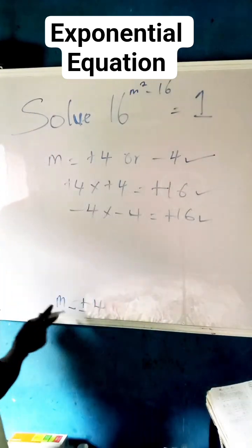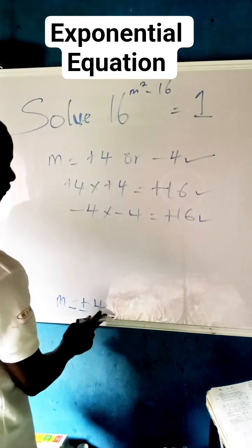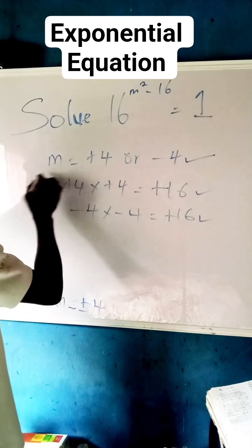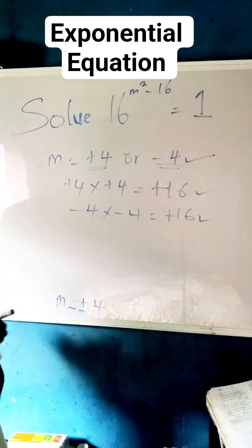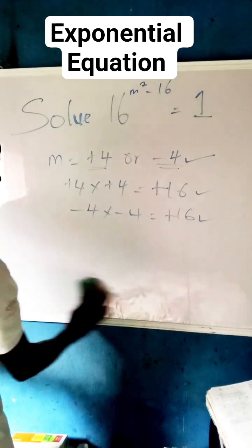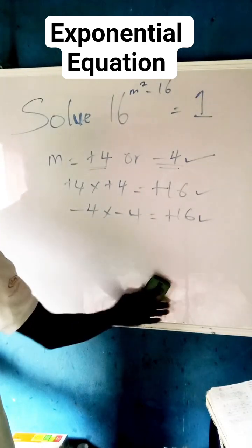So as you can see, our answer is m equals plus or minus 4, which when we expand it, is m equals plus 4 or minus 4. That's the final answer. Don't forget to subscribe to my channel if you have not subscribed for more video tips. Thanks and God bless you all.